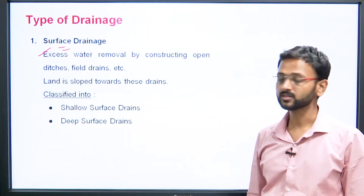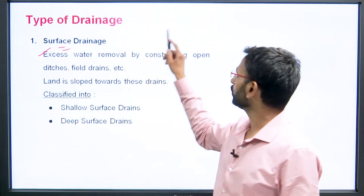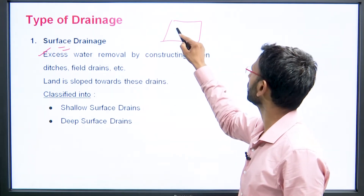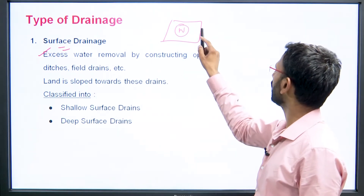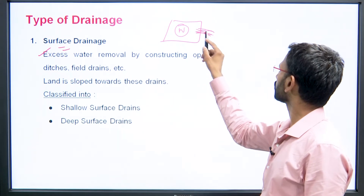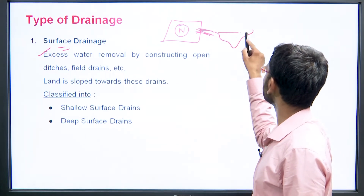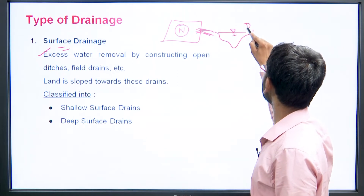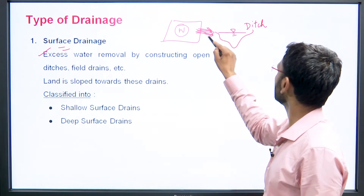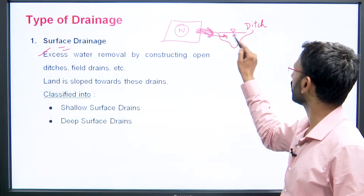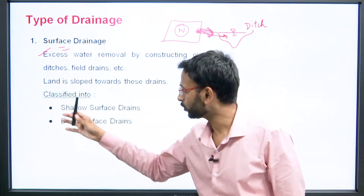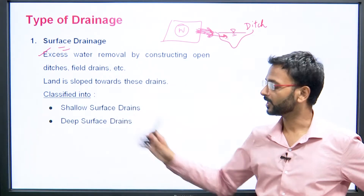Surface drainage involves removal of excess water by construction of open ditches, field drains, etc. Land is sloped towards these drains. For example, if water is collected in an area, you provide a slope toward a constructed ditch, and the water is directed and collected there. Surface drainage is classified into shallow surface drains and deep surface drains.